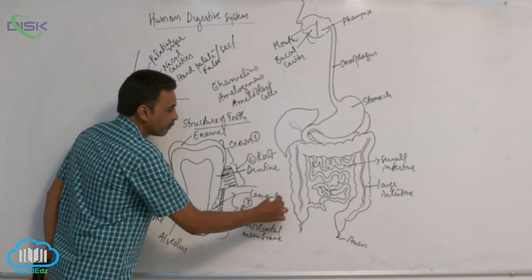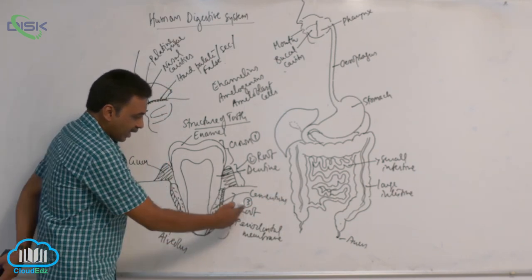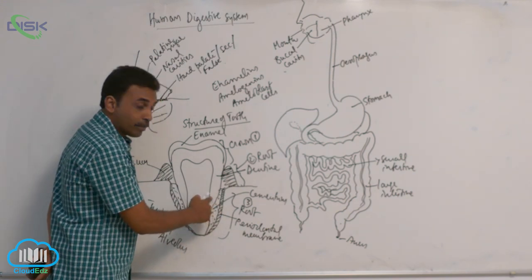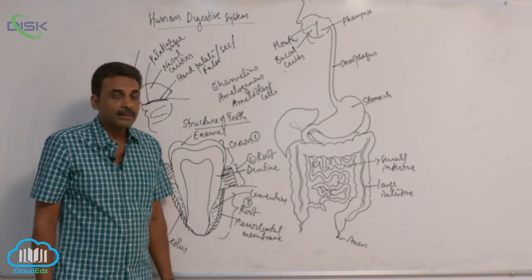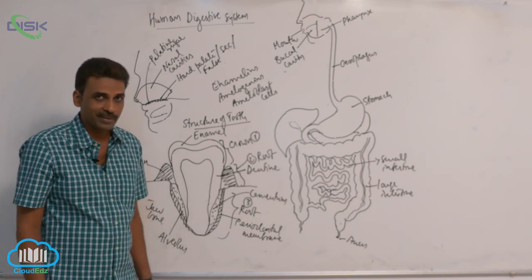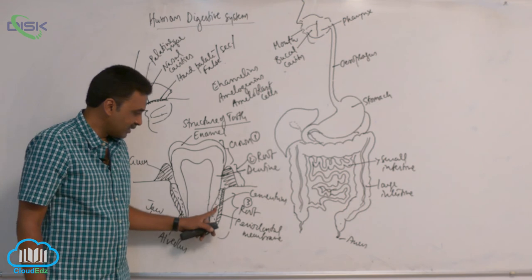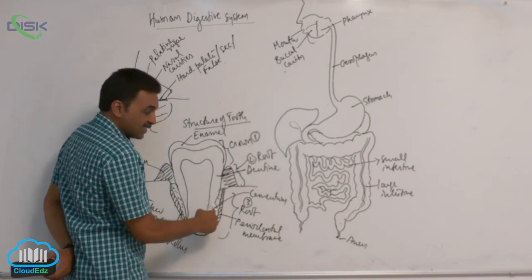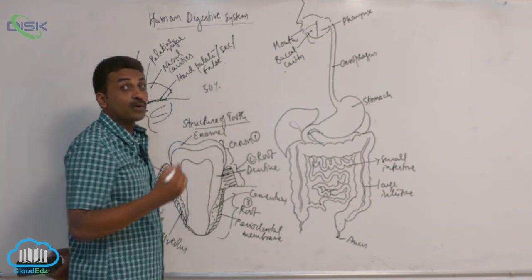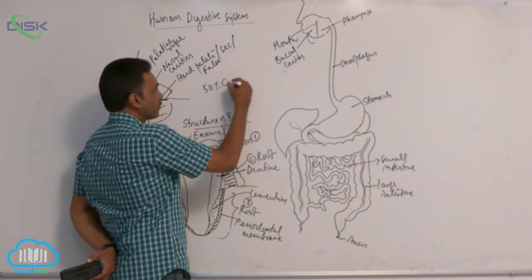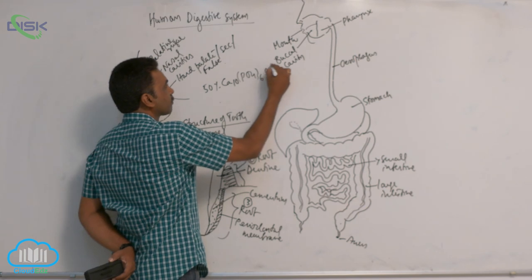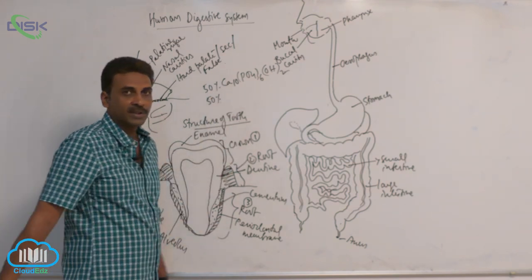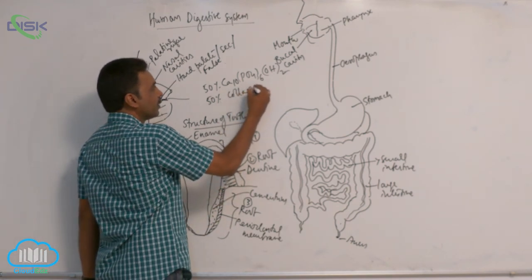Outside in the alveolus there is the periodontal membrane, and towards the inside — in between the periodontal membrane and dentine — you can see cementum. Cementum is a soft form of dentine. Cementum contains 50% hydroxyapatite — that is calcium phosphate — and the remaining 50% contains collagen and proteoglycans.